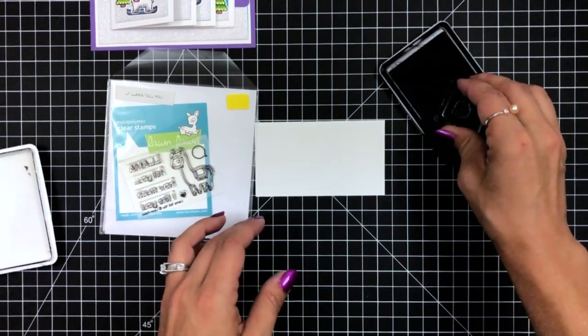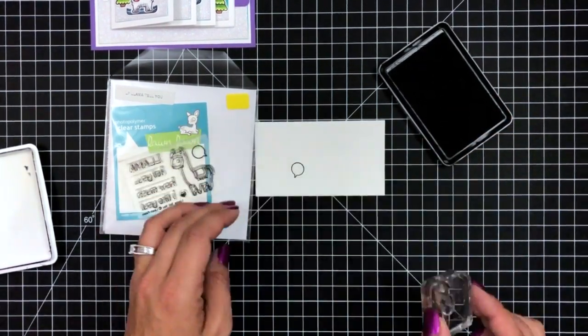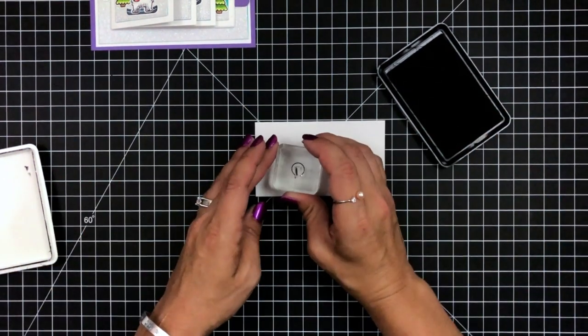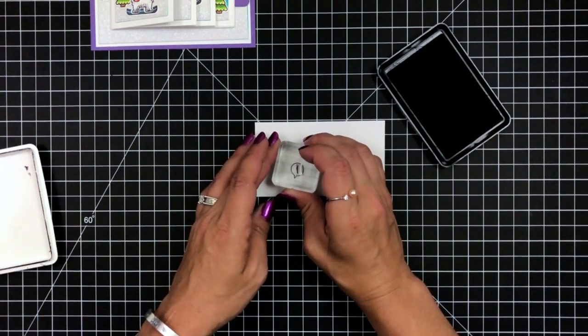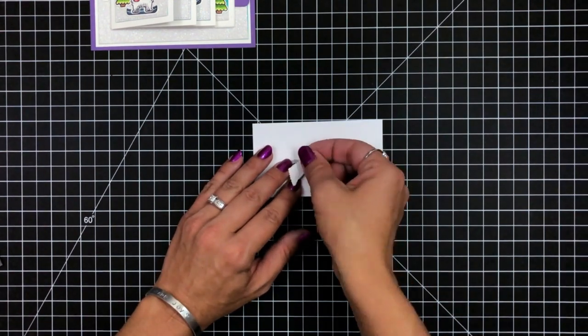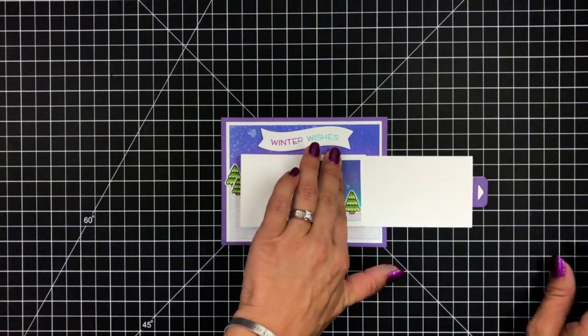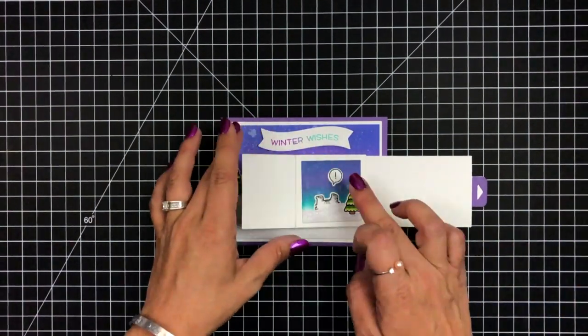Now one more piece I almost forgot is an exclamation point with that speech bubble. This is the Llama Tell You stamp set with the speech bubble. The exclamation point comes off of the Yeti or Not stamp set. Then I can just use that coordinating die to die cut that out and add that to my Yeti, which I thought was so fun and adorable.